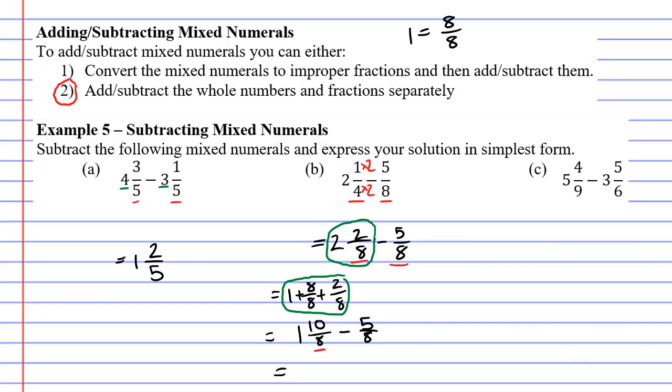Focusing on my fractions first, the denominators are both 8 so my solution will have a denominator of 8. With the numerators 10 minus 5 makes 5, and when I focus on the whole numbers, the whole number being 1, there is no other whole number so I'm just going 1 minus nothing which gives me a whole number of 1. This now gives me my final solution of 1 and 5 eighths.